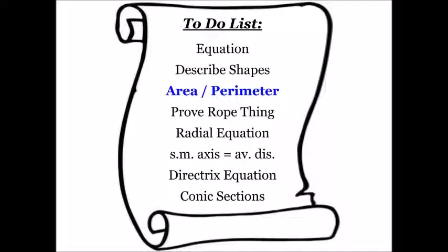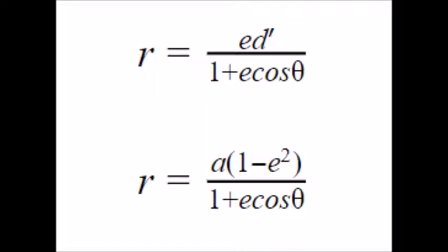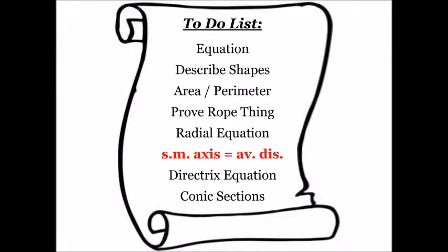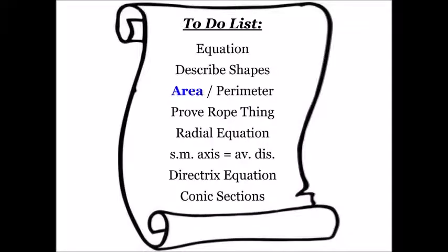That's what we have left to do in this part because we proved the rope thing and wrote radial equations and made astronomers happy, found the directrix, and made peace with our conic cousins. On to area.